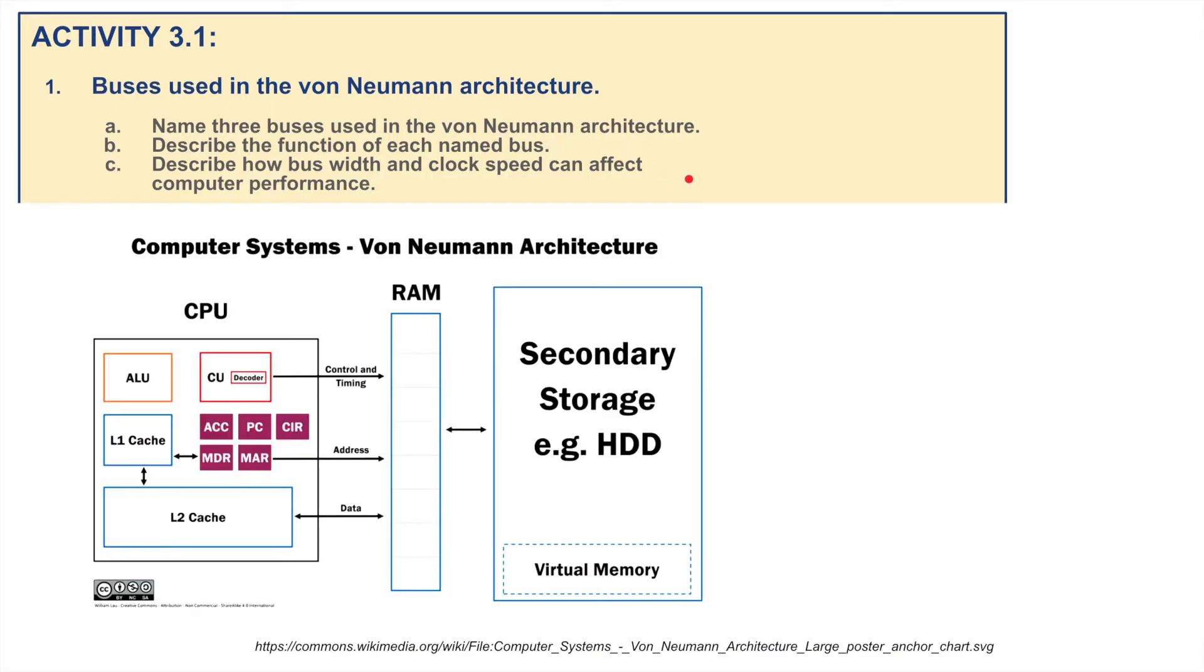Then we're going to describe the function of each of these named buses and we're going to describe how bus width and clock speed can affect computer performance. Let's have a little look at this. Here I've got myself a diagram. This is the CPU broken into all its parts: the ALU, the CU, ACC, PC and all the rest of it. This is connected to the RAM, the Random Access Memory, and we've got some secondary storage here which we don't need to worry about for this.